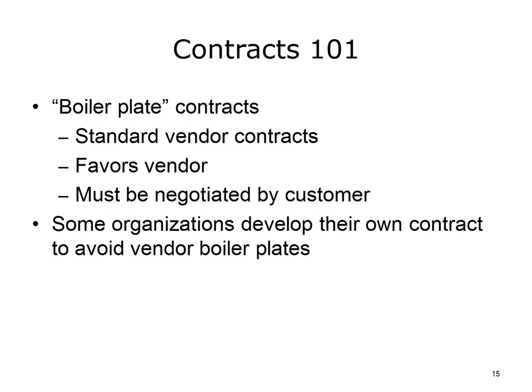Most vendor organizations have a boilerplate contract — their standard contract without any customization for the unique needs of the particular client. At the time negotiations begin, they will be happy to provide you with their boilerplate contract. Generally speaking, all the terms and conditions in a boilerplate contract are written to the favor of the vendor and must be negotiated by the customer to either the customer's favor or at least a neutral position. In light of this, some organizations will not accept a vendor boilerplate contract and instead will develop their own contract and use that as a starting point for negotiations.